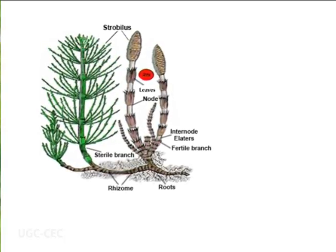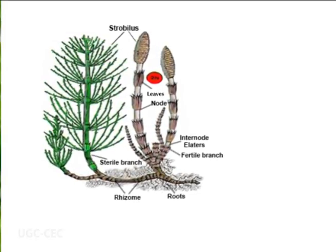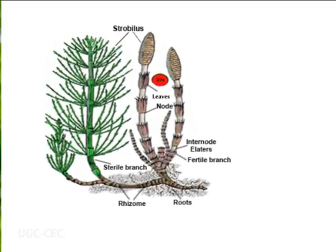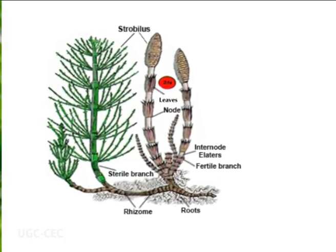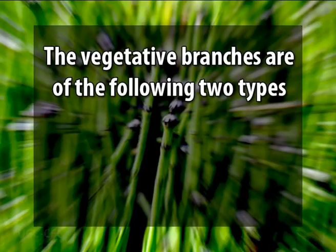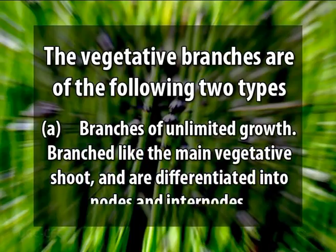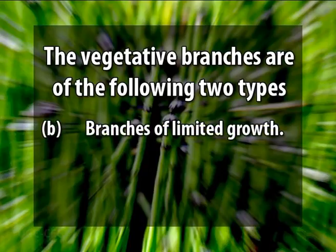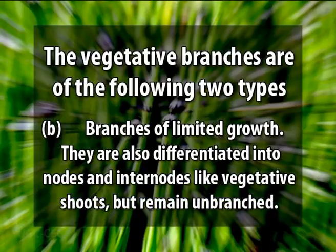Both types of shoots are differentiated into nodes and internodes. The vegetative shoots are usually branched, green, and photosynthetic, while the fertile shoots are unbranched and achlorophyllous, each terminating into a cone or strobilus. The vegetative branches are of two types: branches of unlimited growth, which are further branched and differentiated into nodes and internodes; and branches of limited growth, which are also differentiated into nodes and internodes but remain unbranched.